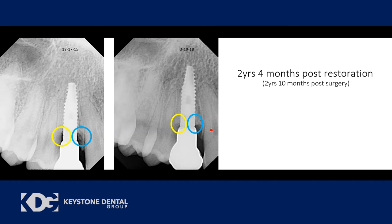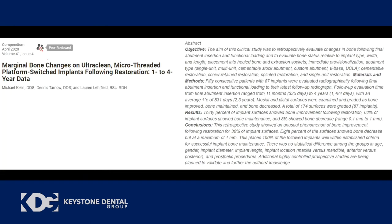This is interesting because it contradicts what Brånemark originally taught us — that we would have about one millimeter of bone loss in the first year, then maybe 0.2mm per year in a healthy implant. Things have certainly changed in the era of platform switching and altered surfaces. But here I'm seeing bone improvement — something has changed in the biology at the interface such that in the remodeling process, bone isn't running away but instead maturing and condensing against the implant surface.